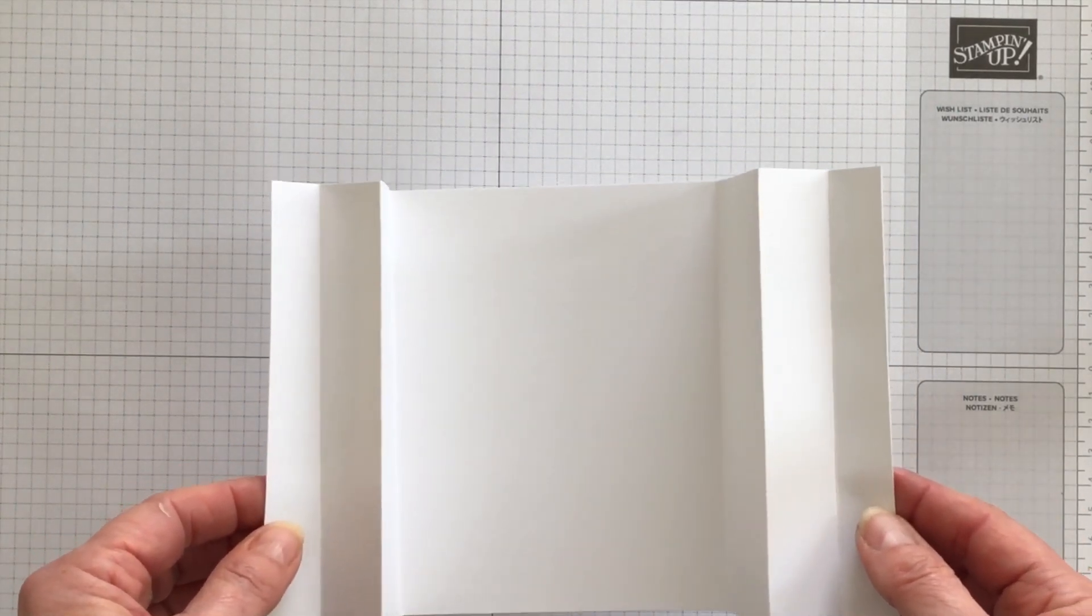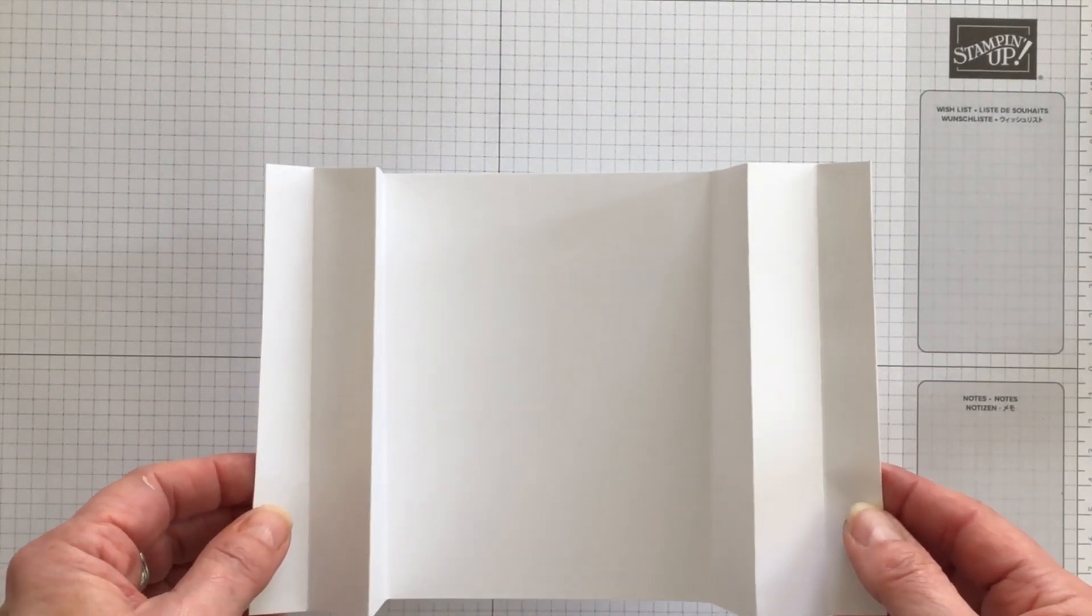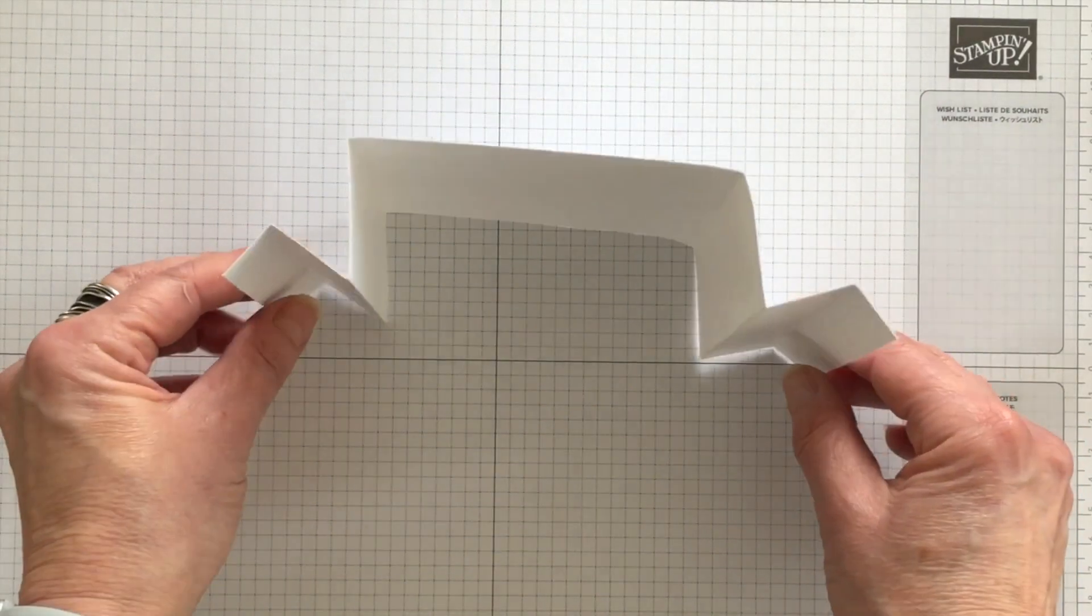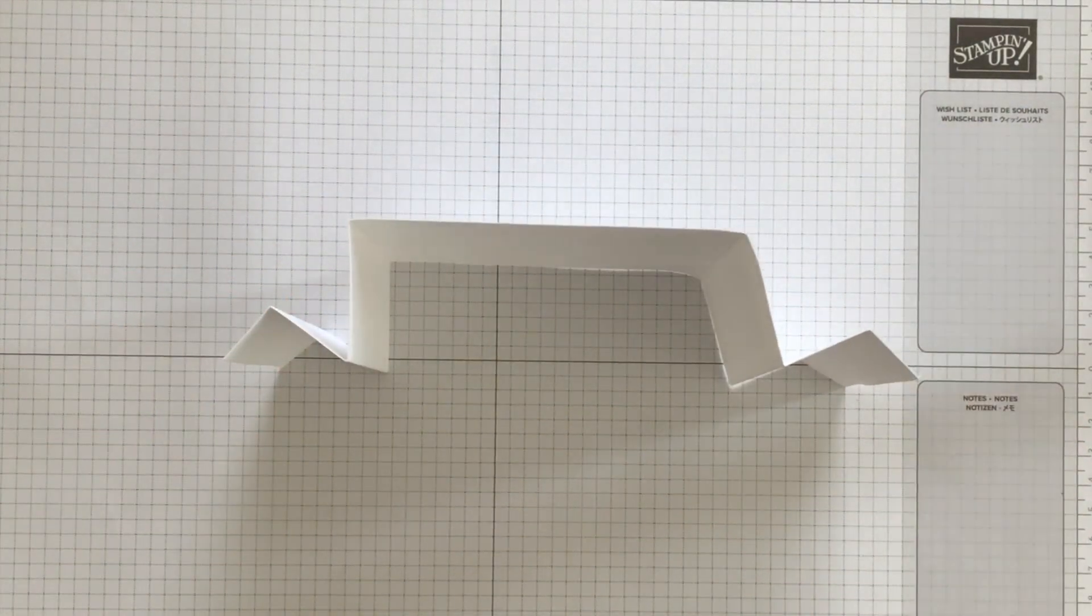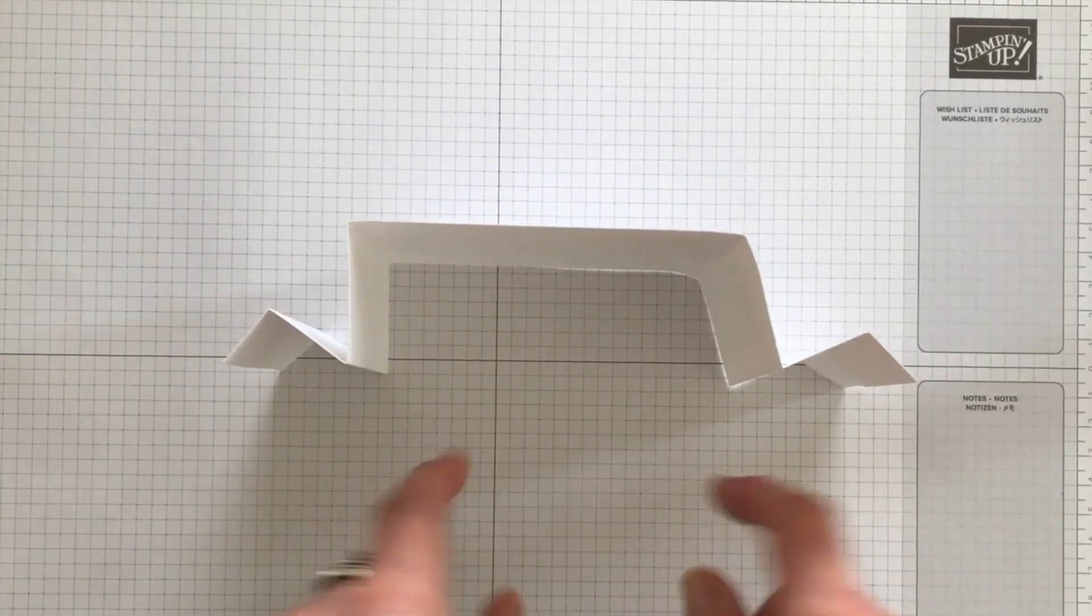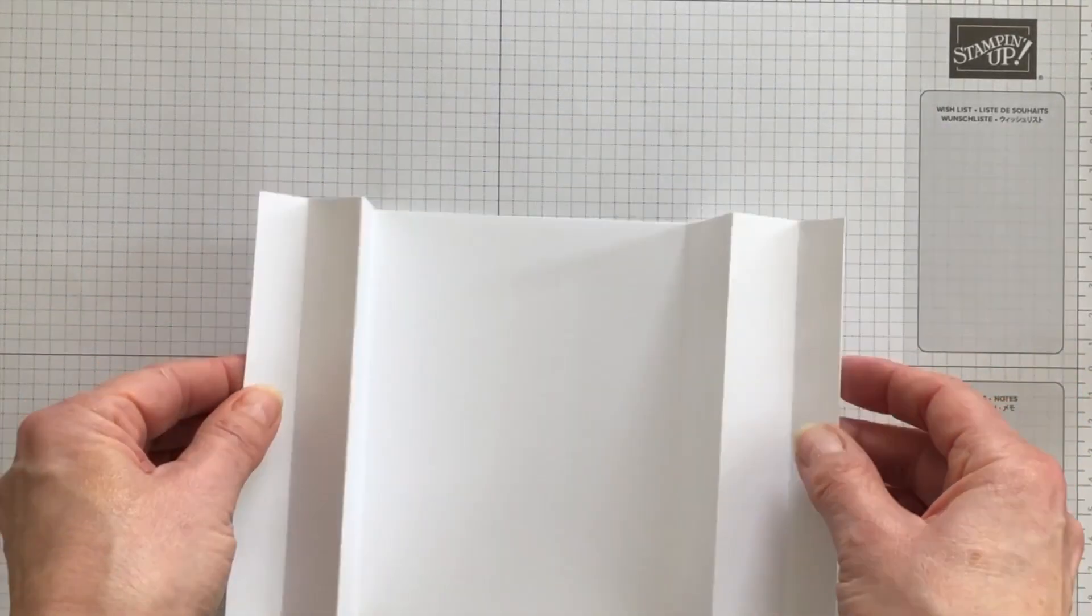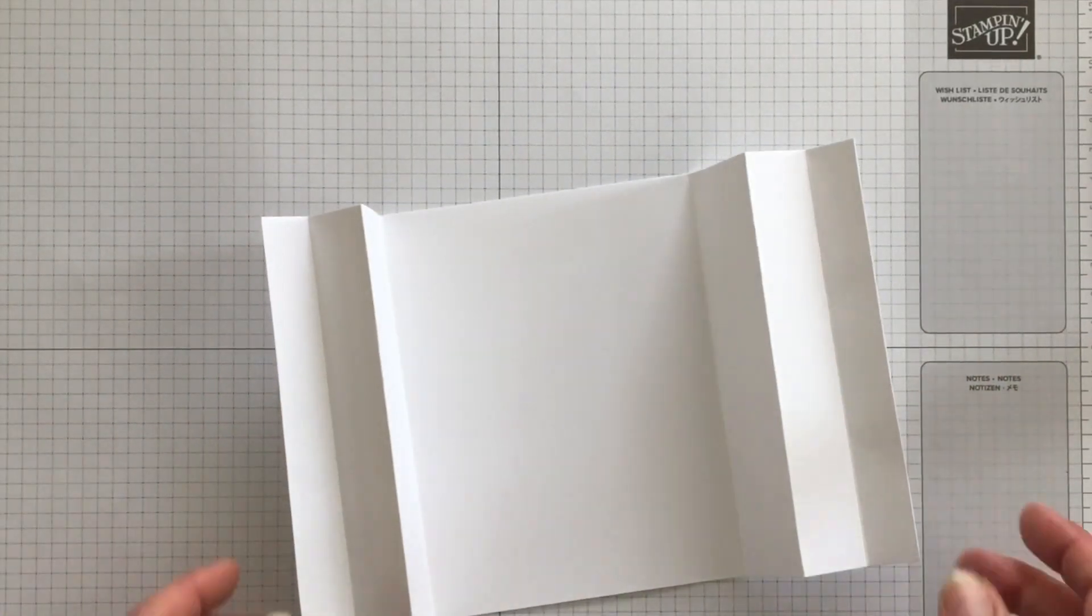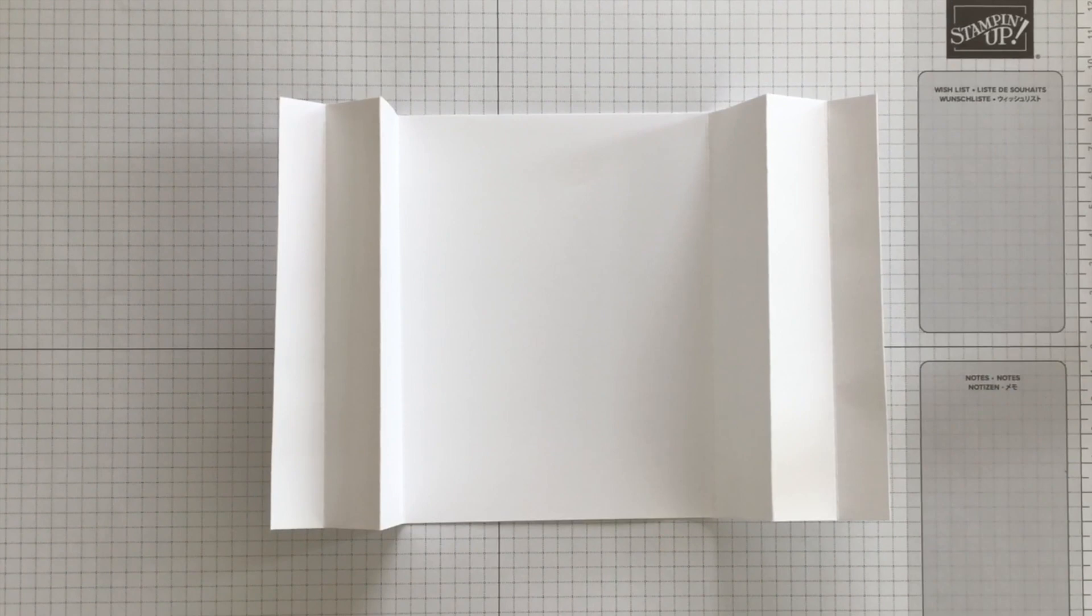Now the demonstrator that created this fun fold calls it the curtain call fun fold because the card is actually designed to stand up. So it's got like a stage and then it's got the curtains on the side. So again, you've got your stage and your curtains on the side. Now let's use some of the Hello Irresistible Designer Series paper to decorate this card.